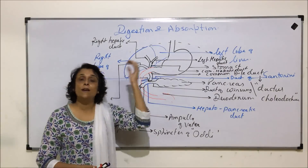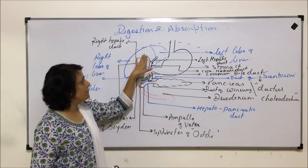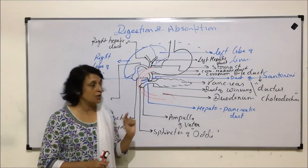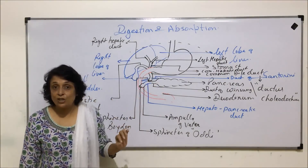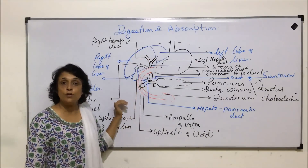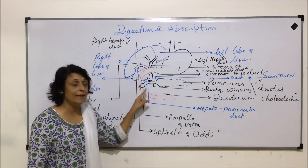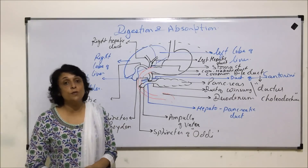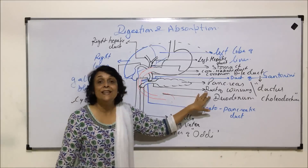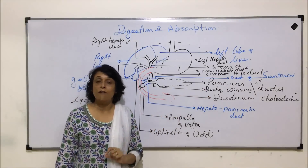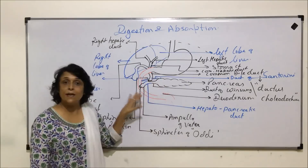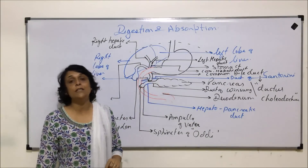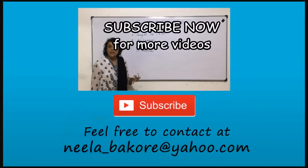When we talk of the complete alimentary canal, liver and pancreas are the two main glands which help in digestion. We have seen the connections — how the liver pours its secretion into the alimentary canal and how the pancreas pours its secretion. This connection is very important, and questions are mainly asked on the names of the ducts. After this, we will talk about the actual structures and functions of these two main glands.